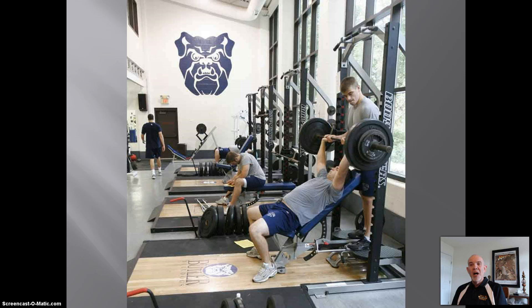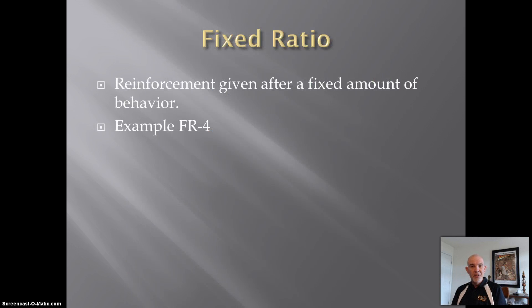Let's say the coach provides positive reinforcement in the form of praise, support, and attention to an athlete after he performs four sets of weight lifting. The athlete gets no attention until four sets have been completed. This is a fixed ratio schedule of reinforcement. Reinforcement is given after a fixed amount of behavior — in this case, four sets of eight, nine, or ten reps. Our example would be called an FR4.